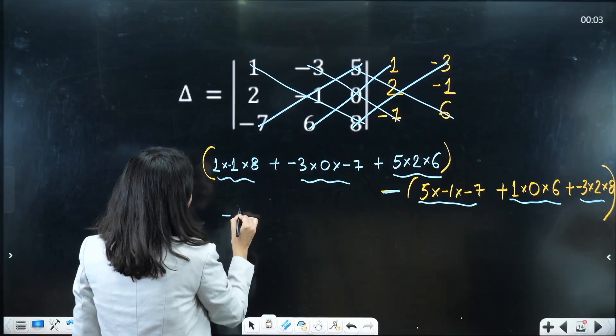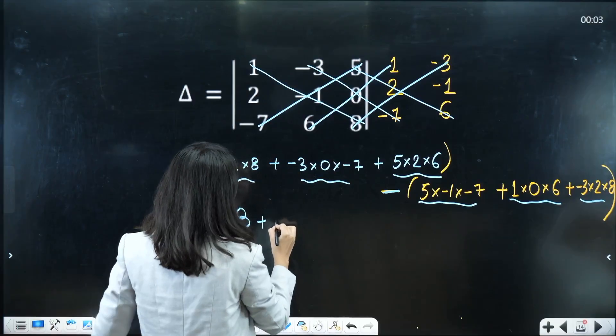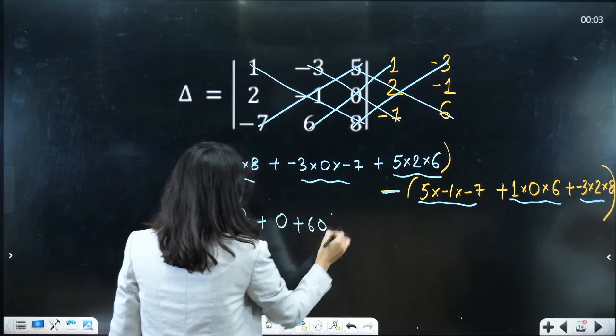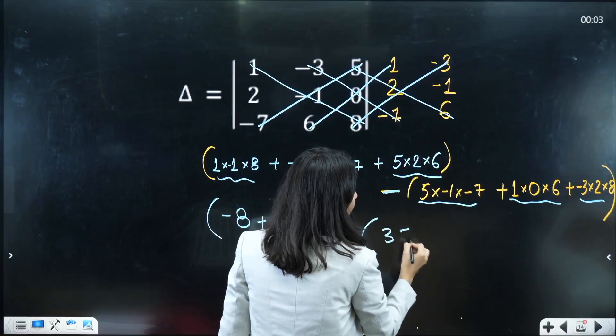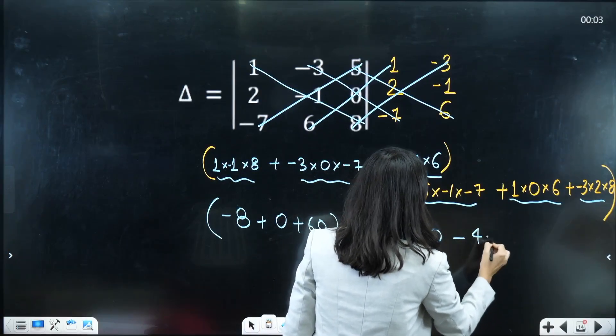Now solve it out. So just minus 8 and then 0 and then 60. So these are the three elements. Now what about this? 35 plus 0 and this is going to be 8 to the 16, minus 48.